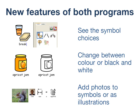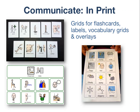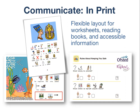So, which program do you need? InPrint is ideal for printing things in grids, such as flashcards, visual timetables, vocabulary sheets and labels. Like Writing with Symbols, you can also make grids to preset sizes to fit specific devices. But you can do so much more — InPrint is like a desktop publisher, perfect for making many other things that need flexibility of layout, because each element on the page can be individually positioned. It's widely used for making symbol reading materials, worksheets, posters and newsletters, and of course is being extensively used for creating accessible information.